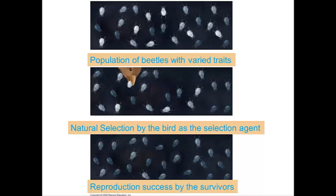Those that remain will be reproductively successful and will pass on those genes to their offspring. So those individuals with heritable traits best suited to the environment are more likely to survive and reproduce. In this case, the less well-suited individual is the white bug — white bugs don't get to reproduce because they get eaten.